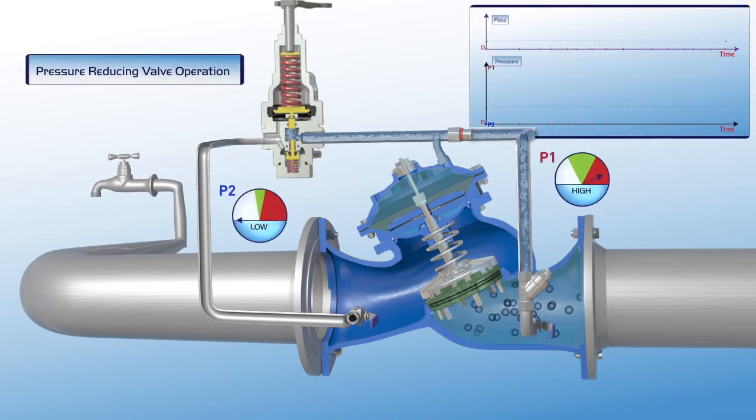At this stage, the pressure reduction valve is closed. The P1 pressure gauge shows that the valve's upstream pressure is high, while the downstream P2 pressure gauge indicates that the consumer supply line is empty.